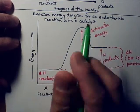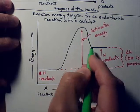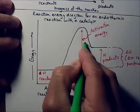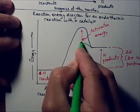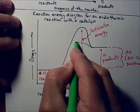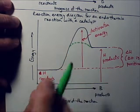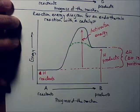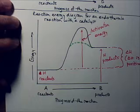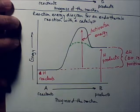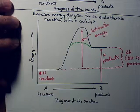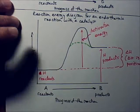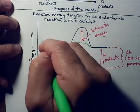The catalyst does exactly the same thing — it's going to cut off the height of this activation energy hill. You don't need as much activation energy if you have a catalyst. It creates a chemical pathway that makes it easier for the reaction to occur because you don't have to climb as high on the activation energy hill.